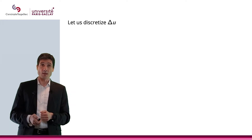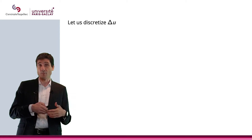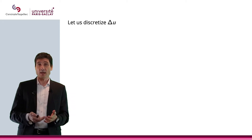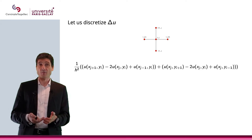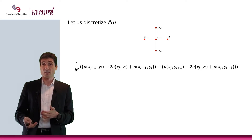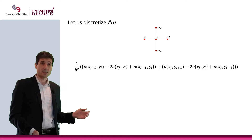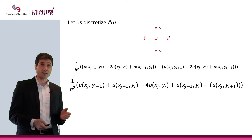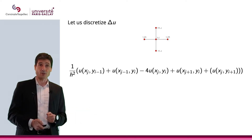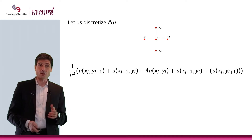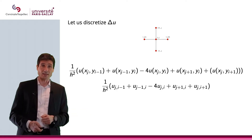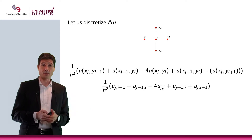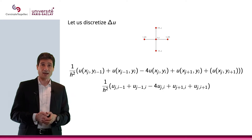In the previous video, we saw how we could discretize, we could approximate Laplace u, and we did this using the five-point stencil. Here is the formula we gave. Let me simplify the notation slightly — I will call this obviously with two indices, with i and j.